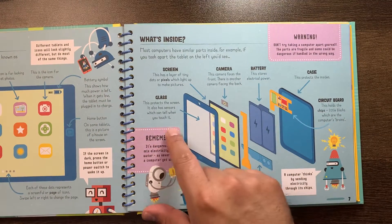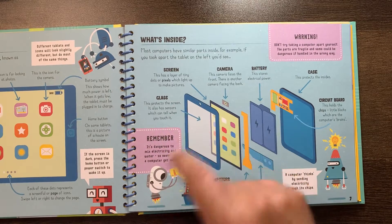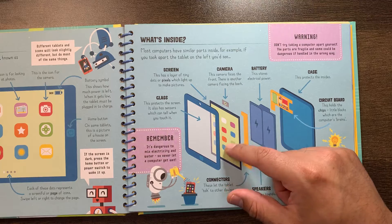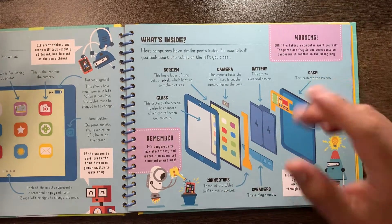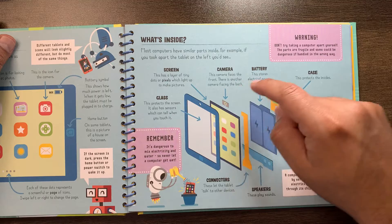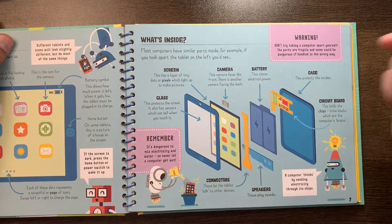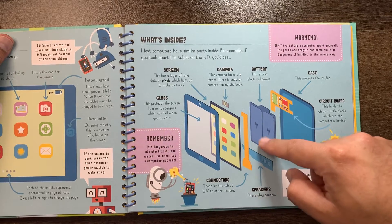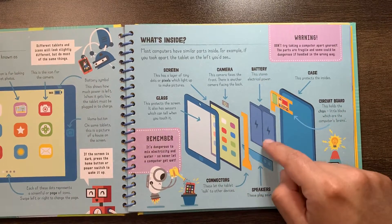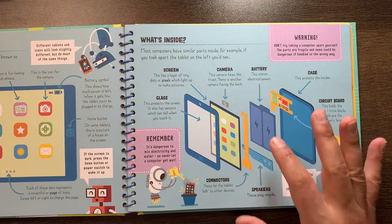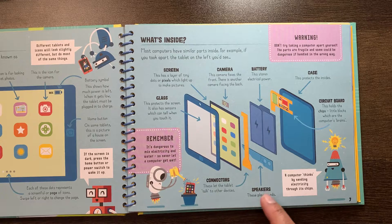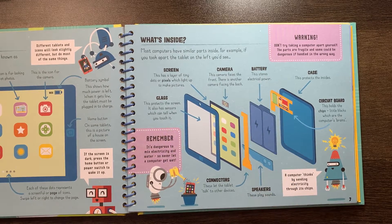I'll show you what's inside. The first part is the glass. The second part is the screen — this holds all the pixels to make pictures. The next part is the camera; usually there's one in the front and one in the back. Then there's a battery — it's really flat, almost like paper — and that holds all the electricity, the power. There are connectors to connect the power cable, and speakers so you can listen to sound and music, even this video.